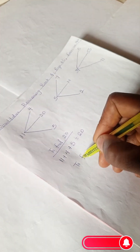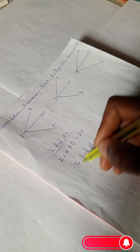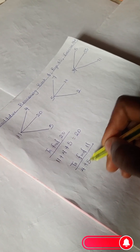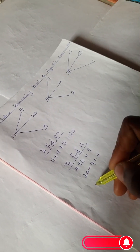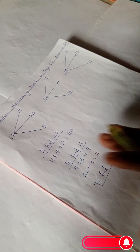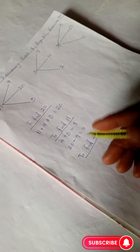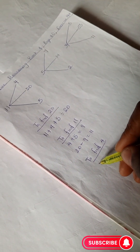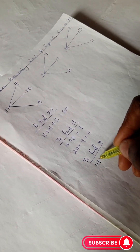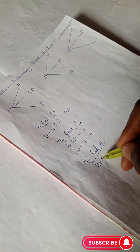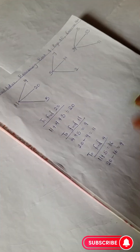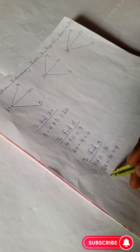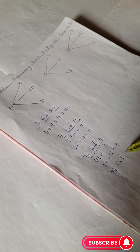To find 11, we have 4 plus 5 which is 9, then 20 minus 9 is 11. To find 4, we have 11 plus 5 is 16, and 20 minus 16 is 4.